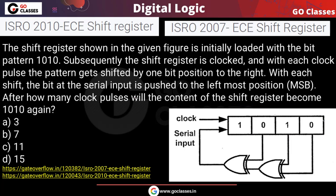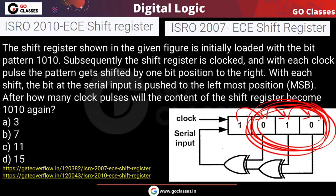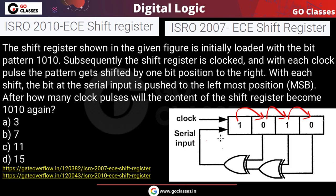With every clock pulse, the pattern gets shifted one position to the right - so this is a right shift register. You can also notice that the data being inserted is the exclusive OR of three of the bits. This exclusive OR result gets inserted while the remaining data shifts to the right.